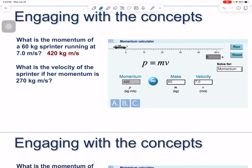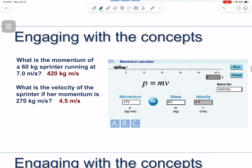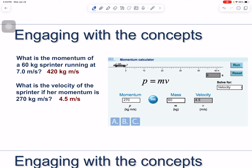What is the velocity of the sprinter if her momentum is 270 kilogram meters per second? The sprinter is still 60 kilograms. Solving p = mv for v, we divide both sides by m: v = p/m = 270 kg·m/s ÷ 60 kg = 4.5 meters per second.